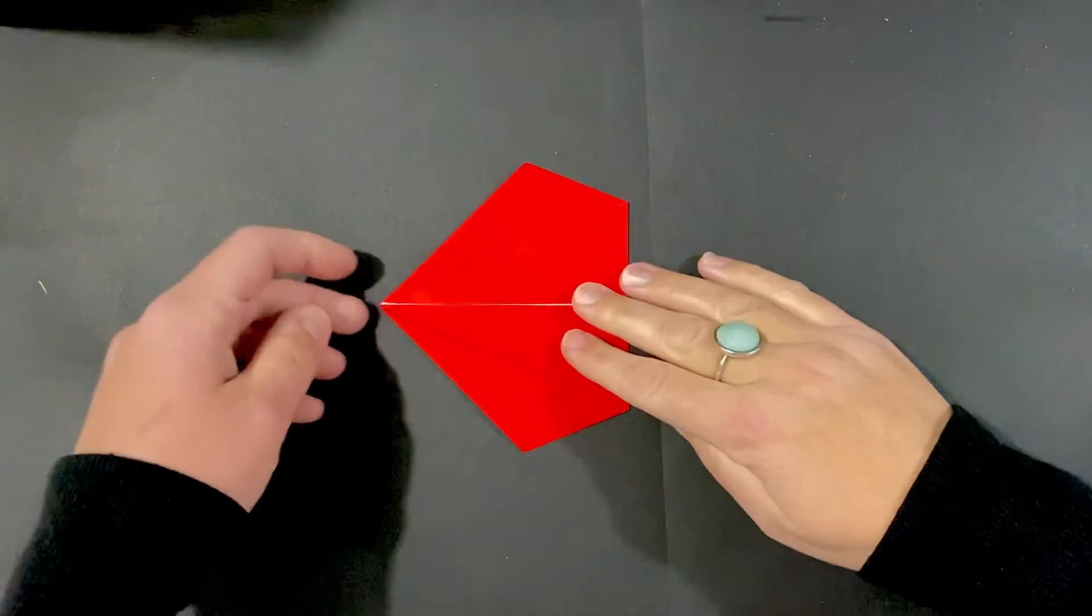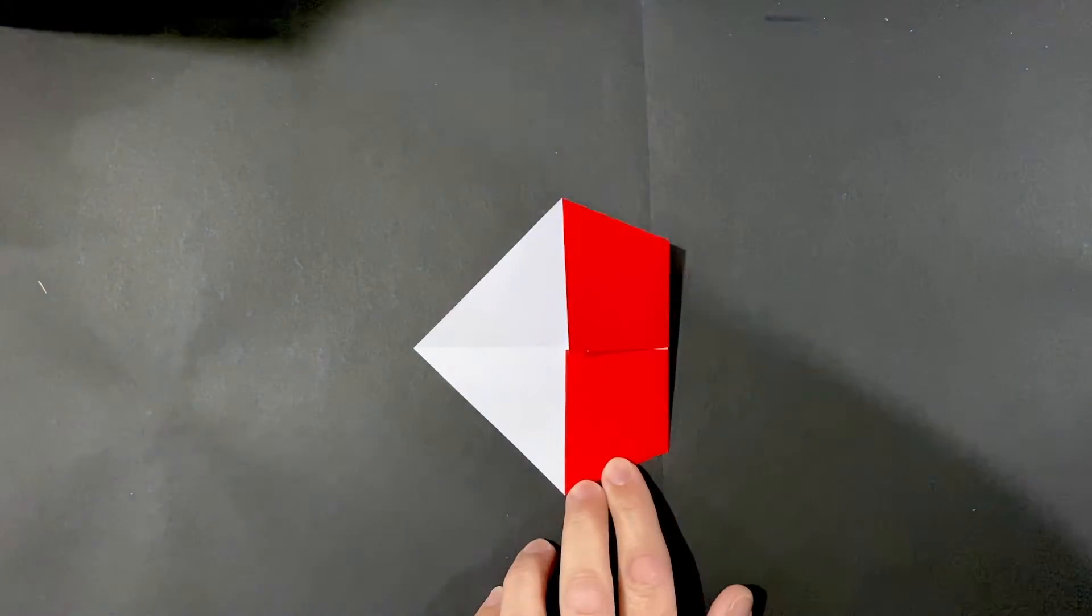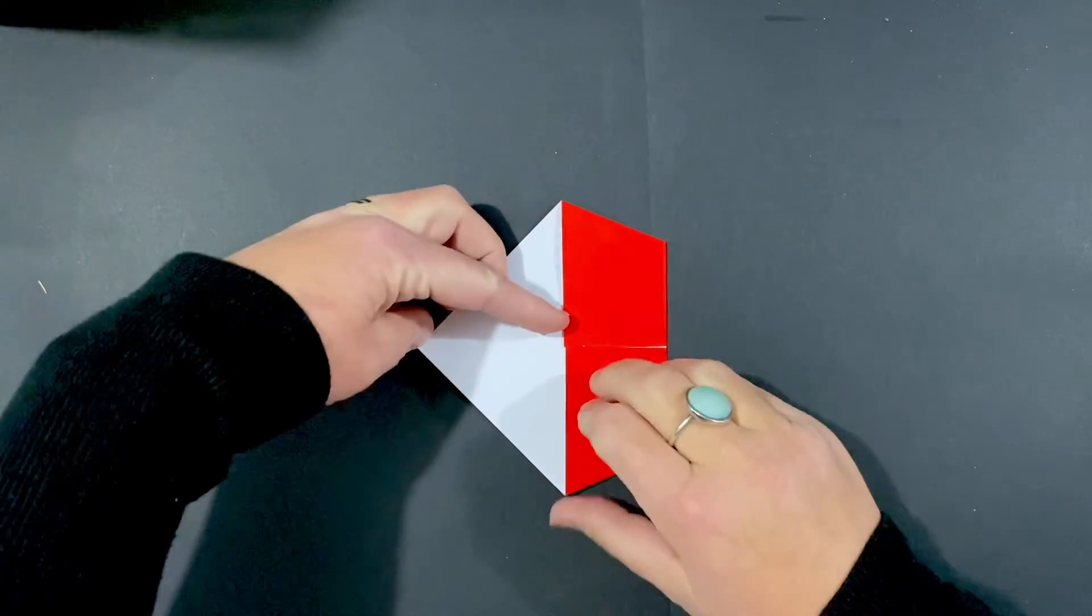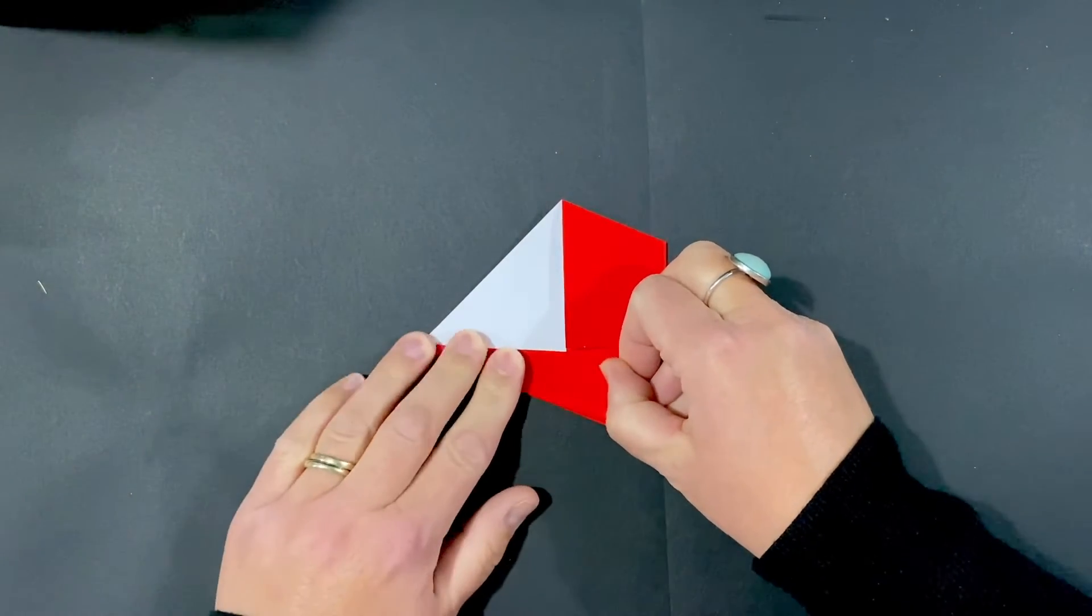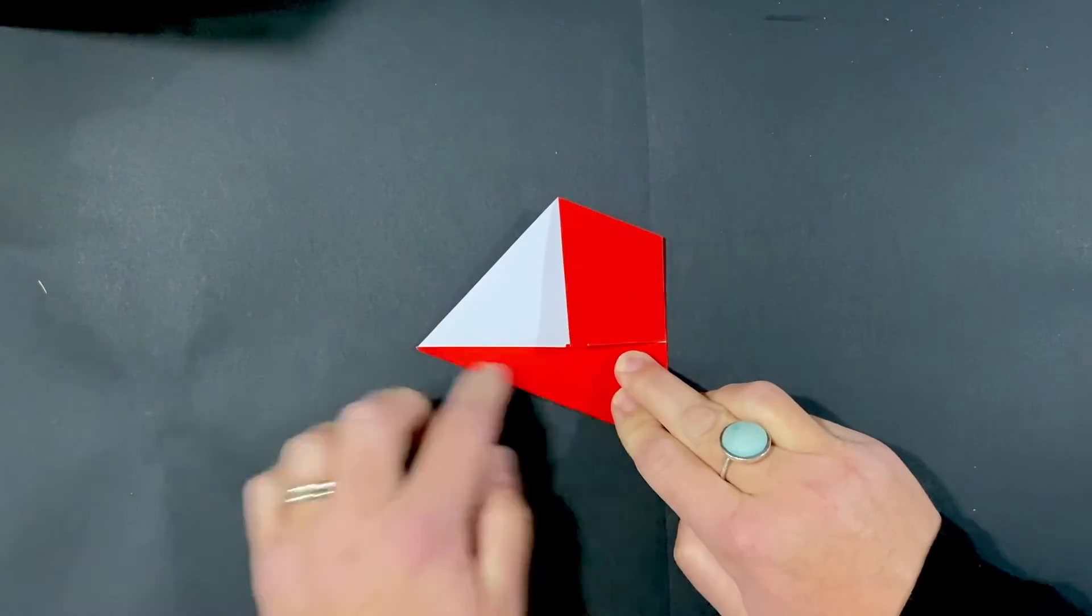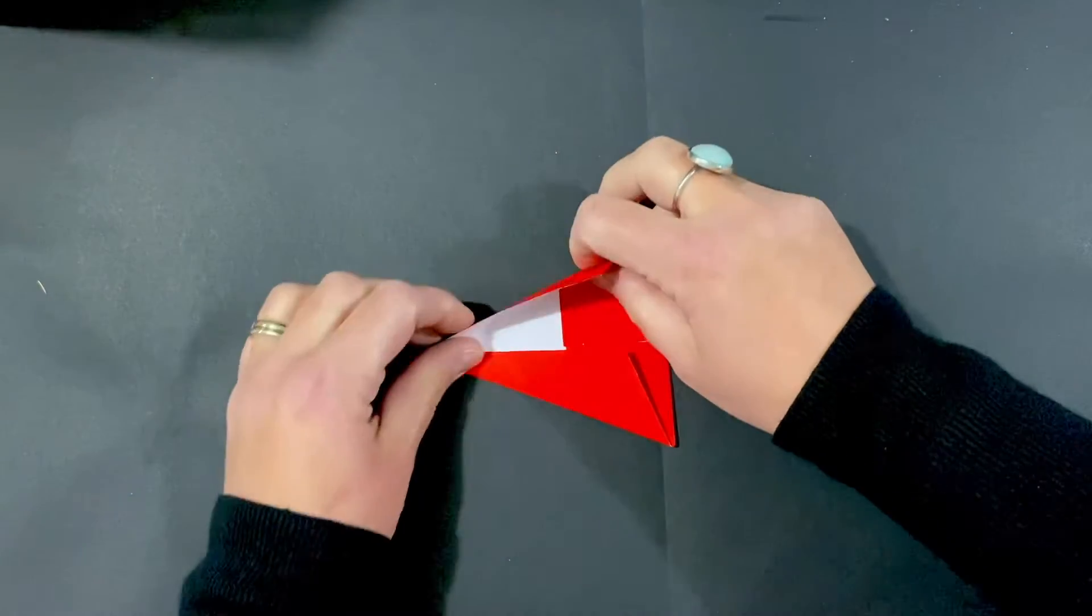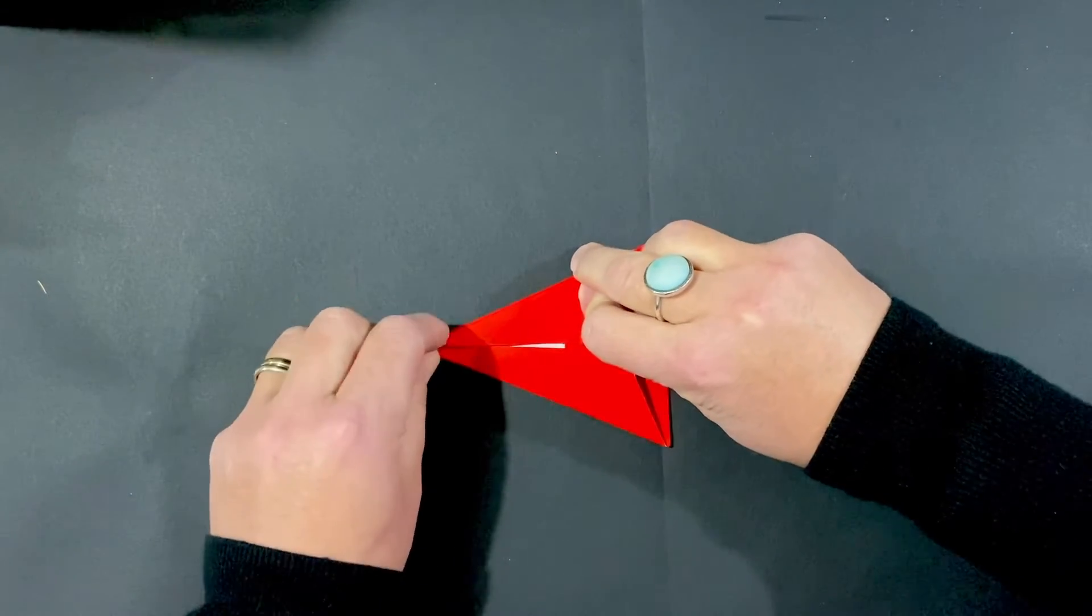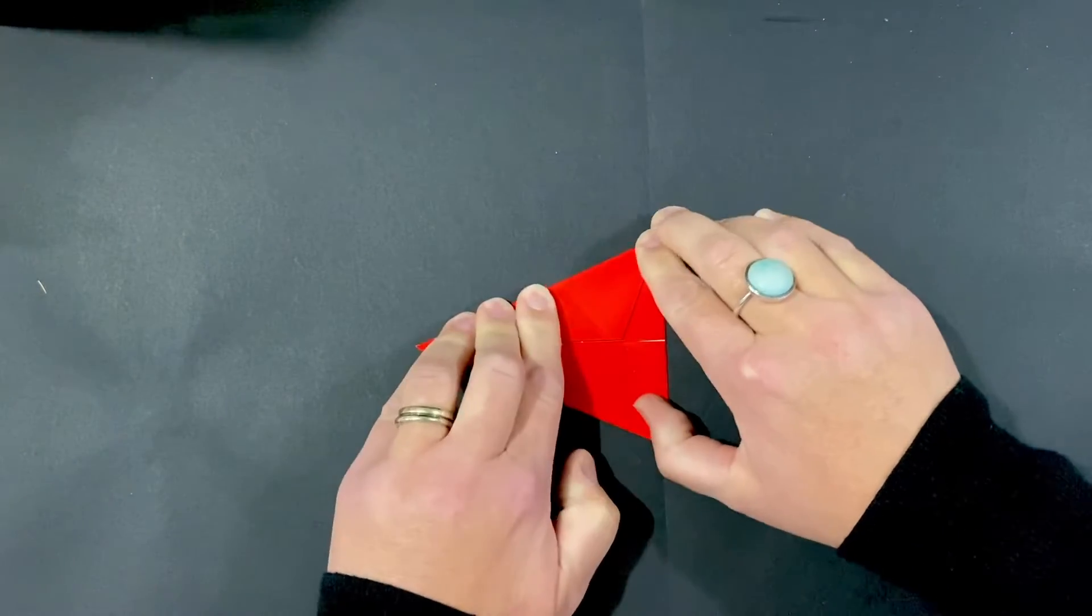Next, you're going to flip it over to the other side, and we are going to fold the top and bottom in. So those are more diagonal folds and they're going to meet on that horizontal crease in the center. Do this on both sides. Give it a good crease.